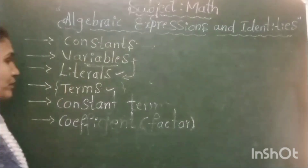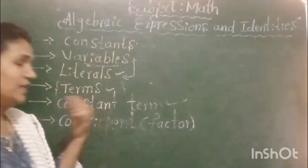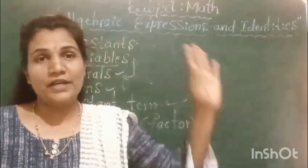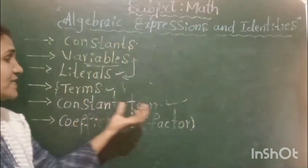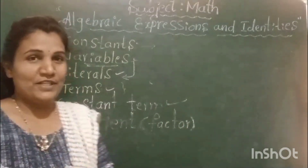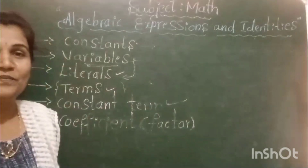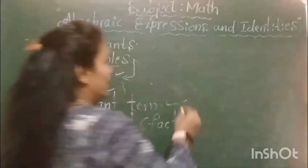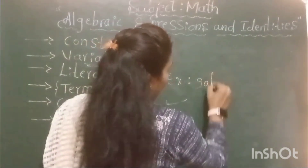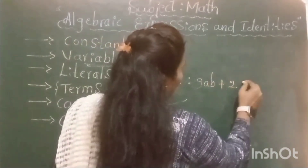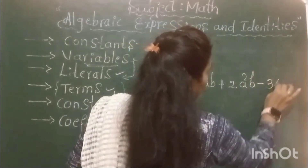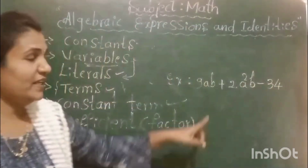Next we will move to constant term. We already know a constant has a fixed value — a fixed numerical value. Now, what is a constant term? Let me take an example: 9ab + 2a²b − 34. Here, 9 is a constant, ab are variables.